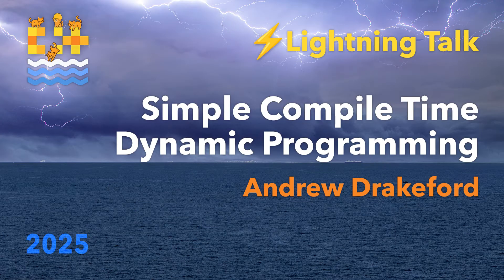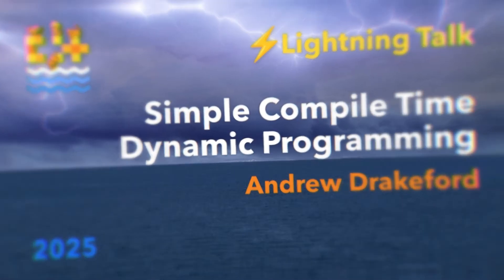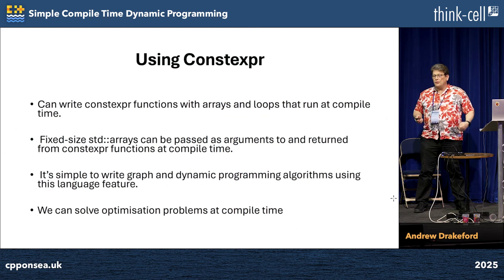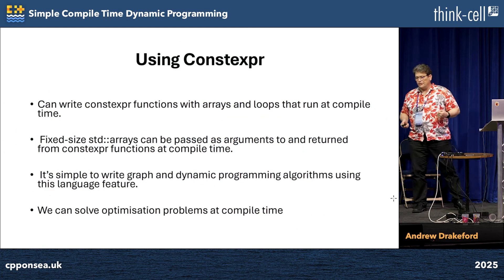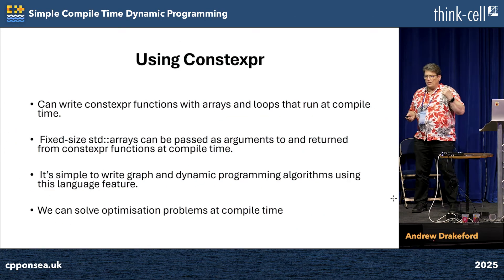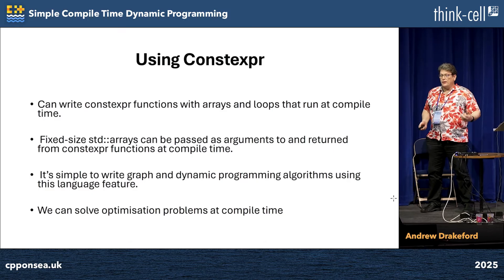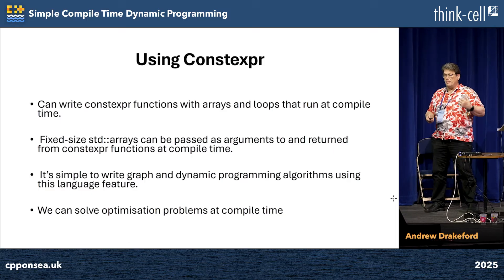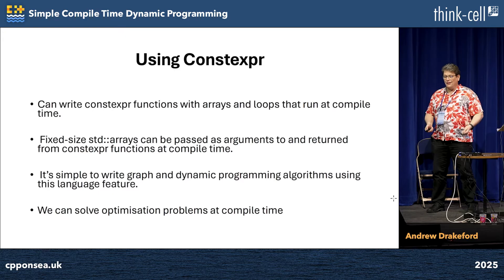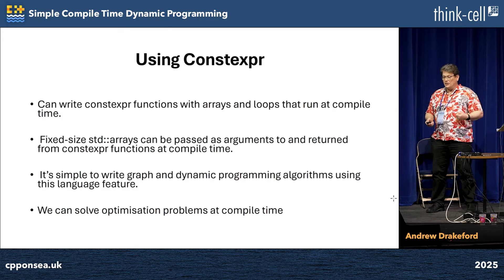Simple compile-time dynamic programming using constexpr — there's always a cheat. With constexpr we can write very simple functions with arrays and loops, and that's all we need to be able to write dynamic programming algorithms and graph search. Consequently, at compile time, we can do all sorts of wacky optimisation problems.